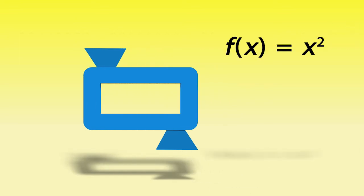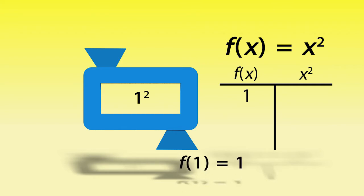This is an example of a function. X is the input, designated by parentheses. Numbers can be substituted for X in order to find the total value of f(x). When 1 is substituted for X, the value of f(1) would be 1 squared, which is 1.